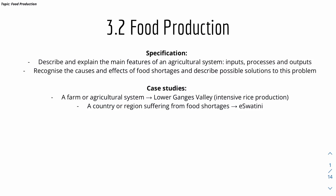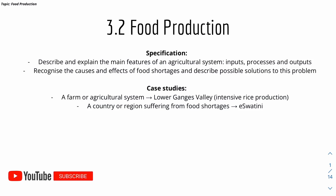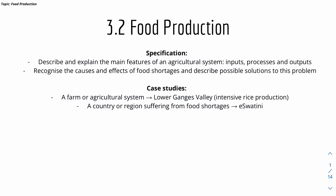Hey friends, my name is Yi, and welcome back to a new video for IGCSE Geography. Today we have a new video for Theme 3, which will look into 3.2 for food production. Here are the specifications from the website, and in this video we have two case studies: a farm or agricultural system, and a country or region suffering from food shortages.